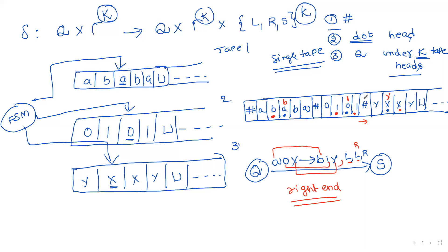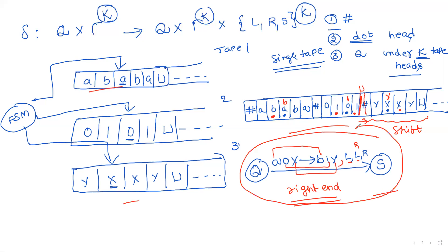Once we make the transition, we scan across the entire single tape, update each cell, and move the dots accordingly. A special case: whenever the tape head moves off to the right end and there is no blank symbol there — meaning the end of that tape section — we must perform a shift operation and insert a blank symbol at that position. This is the complete simulation of a multi-tape Turing machine using a single tape, proving that both have the same expressive power.